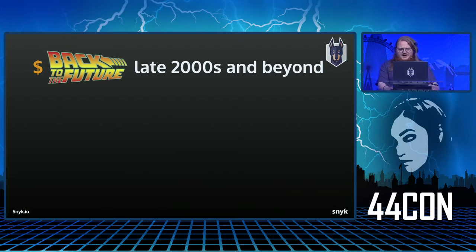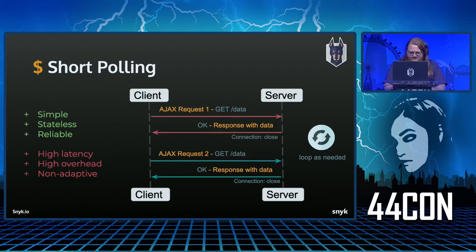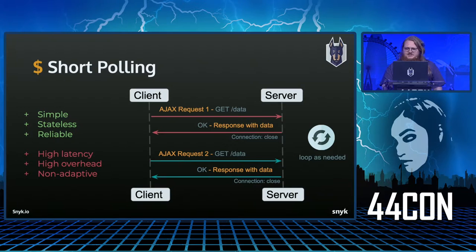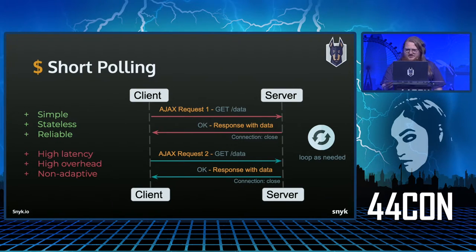The first modern approach to enabling a real-time feel is AJAX short polling. This works by having the browser send an HTTP AJAX request to the server, which sends back data or an empty response if no updates are available, and the process repeats when new updates are required. The main drawbacks are that it's non-adaptive — state updates must be requested by the client — and there's higher latency and overhead due to a new HTTP request required for every single update.